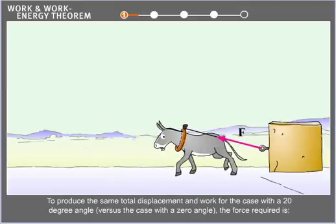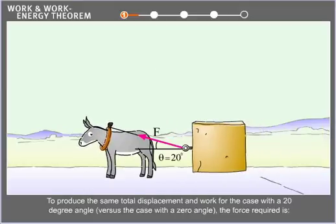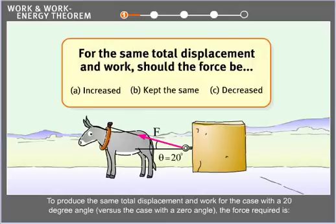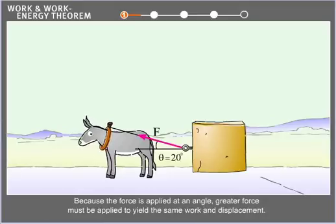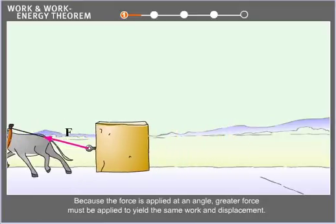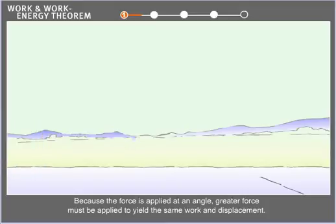To produce the same total displacement and work for the case with a 20 degree angle versus the case with a zero angle, the force required is greater. Because the force is applied at an angle, greater force must be applied to yield the same work and displacement.